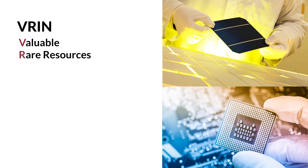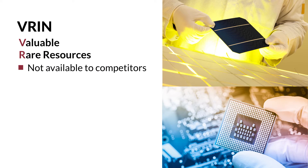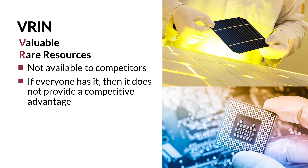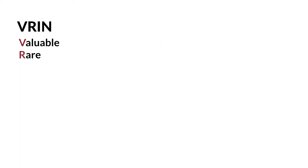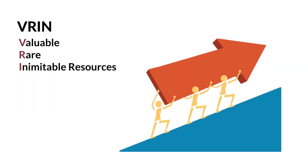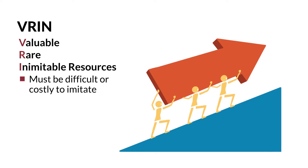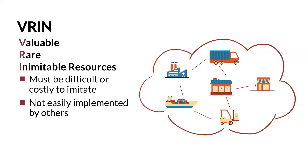Resources also need to be rare, meaning they cannot be widely available to competitors, because if everyone has a resource it is impossible for it to drive differential firm performance and competitive advantage. In RBV language, resources must be inimitable — that is, they must be difficult or costly to imitate, so competitors cannot easily copy and implement your strategic approach. Typically, supply chain processes with many different steps across functional and organizational boundaries are some of the most difficult intangible resources to imitate, because every step in the process is unknown to competitors, or it is unclear which steps are most important. Either way, supply chain know-how is tough to imitate.